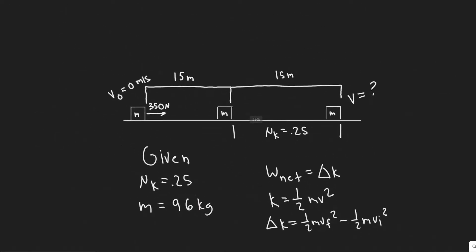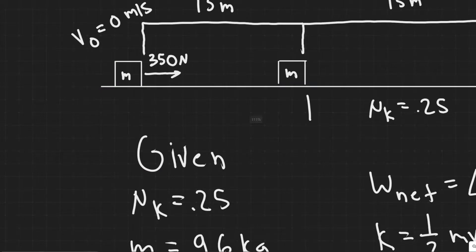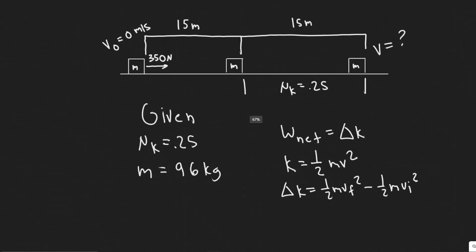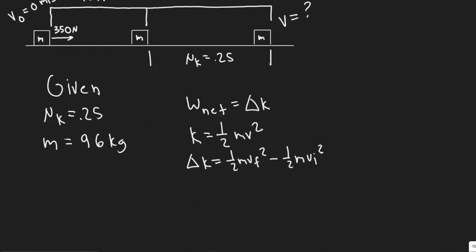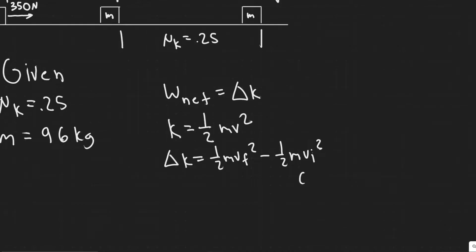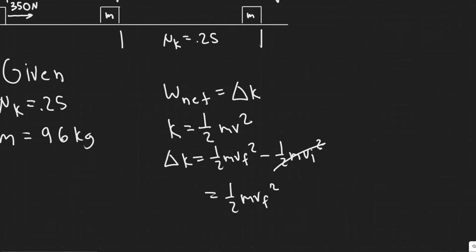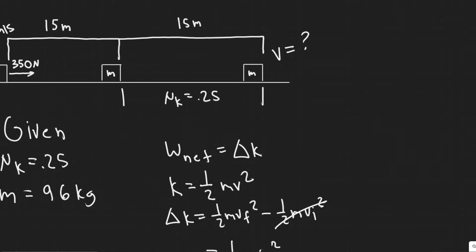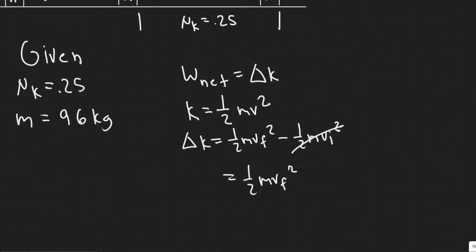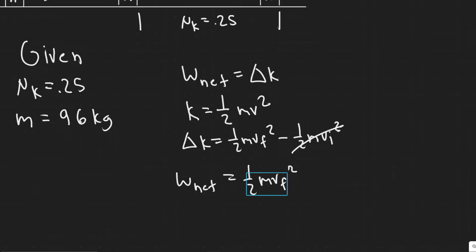At the beginning of our interval, the velocity is zero — v-initial is 0. So the change in kinetic energy simplifies to just one-half mv-final-squared. V-final is the velocity at the end of our interval, which is what we want to solve for. So if we can find the net work done, we can solve for v-f since it will be the only unknown.